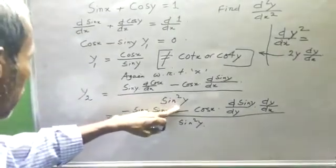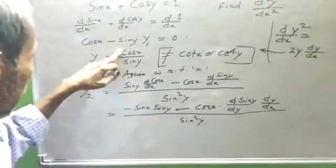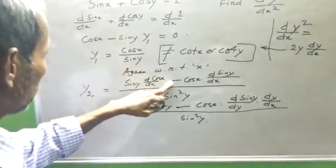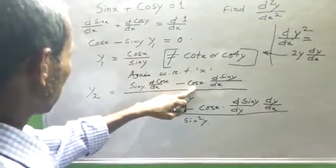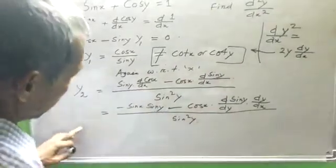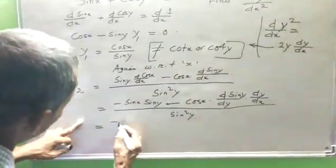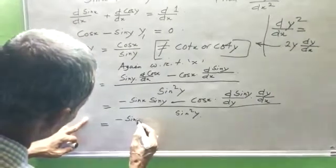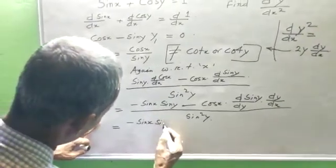Sin² y sin x, d/dx of cos x minus cos x times cos x into d/dx of sin y, cos x by sin, and d/dx of sin x equals minus sin x, sin x sin y.